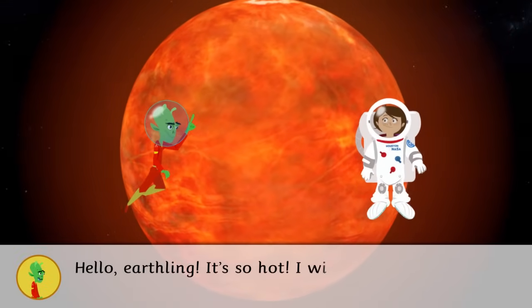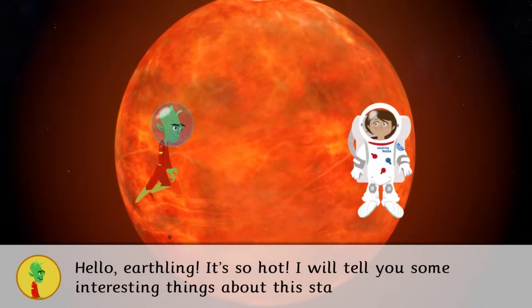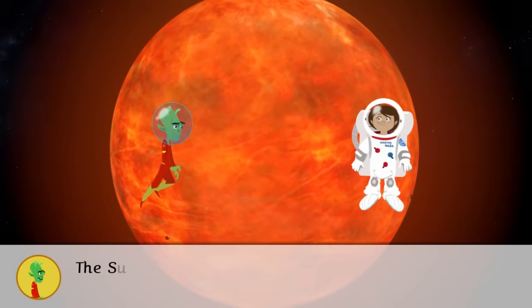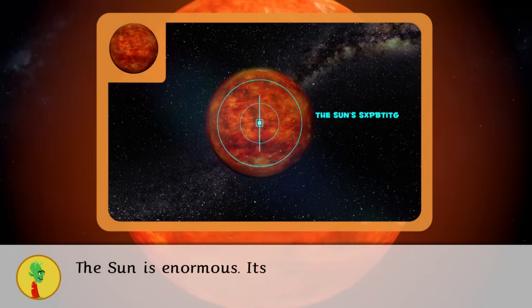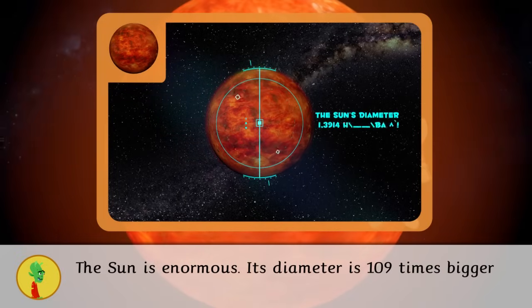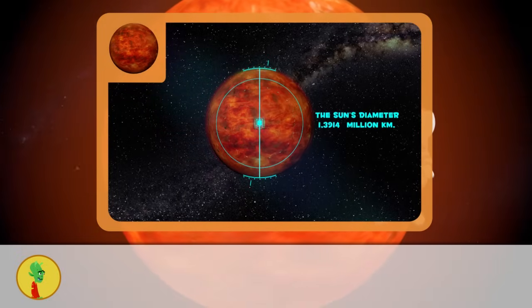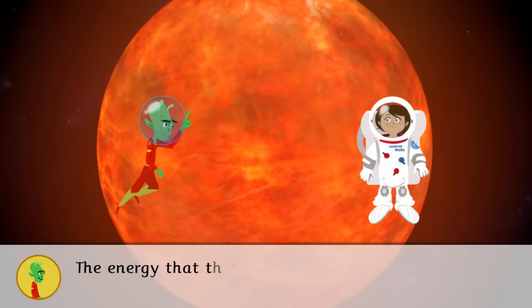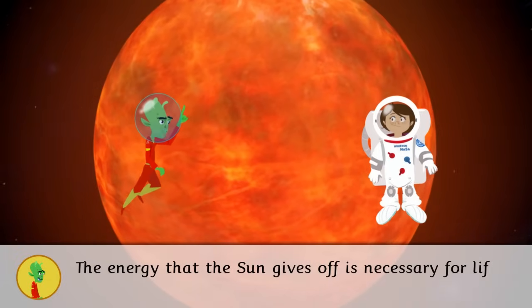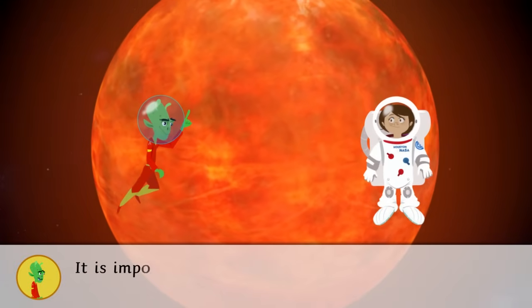Hello earthling, it's so hot. I'll tell you some interesting things about this star. The Sun is enormous. Its diameter is 109 times bigger than the Earth's. The energy the Sun gives off is necessary for life on Earth. It is important to protect yourself from the Sun. Its ultraviolet rays are very harmful to human skin.